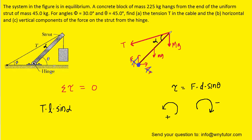Next, we look at the torque produced by the force Mg. We take that force Mg, multiply it by the distance from where it acts to the pivot, which is again l, and then multiply by the sine of the angle between that force and the strut — we'll call that angle beta. As Mg pulls downward on the strut, it tends to cause the strut to rotate clockwise, so that is a negative torque.